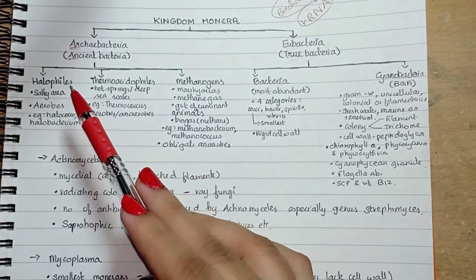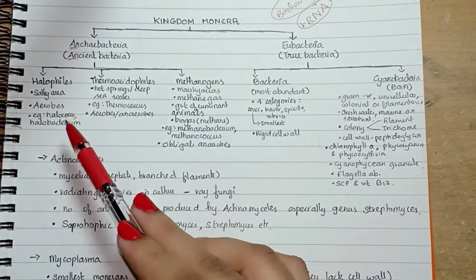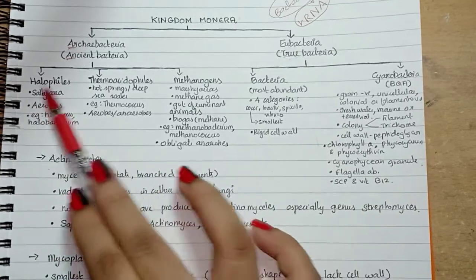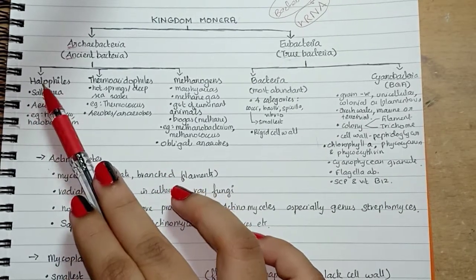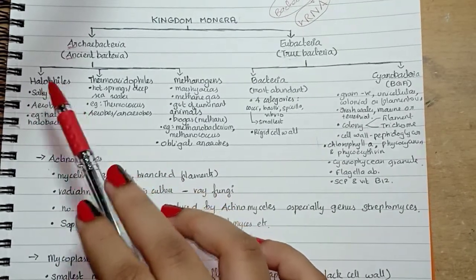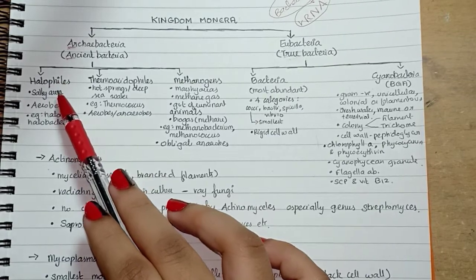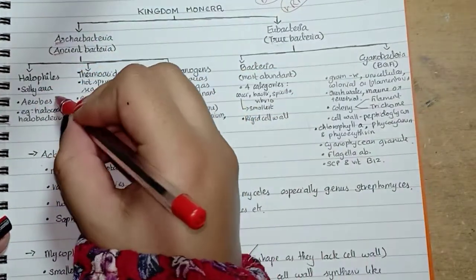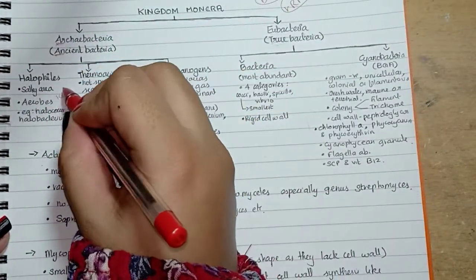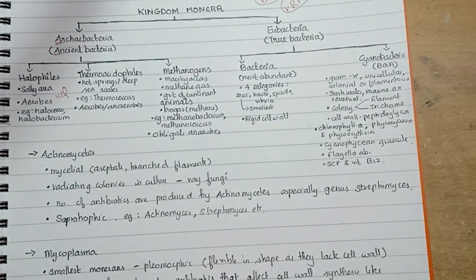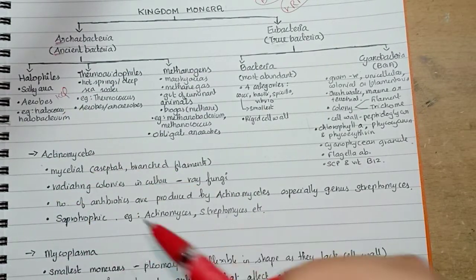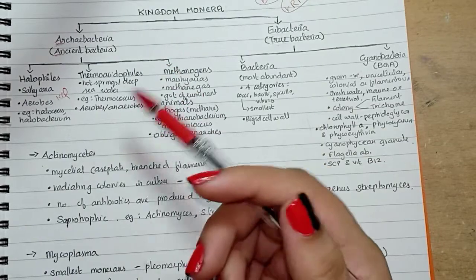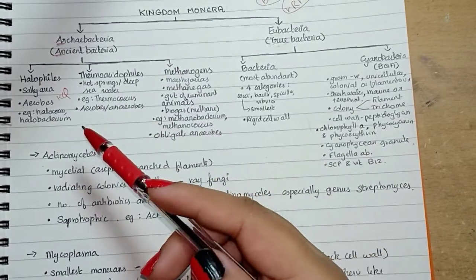They grow in concentrated salt solutions due to the accumulation of KCl. Due to the accumulation of KCl, they can live in high, concentrated salt solutions.